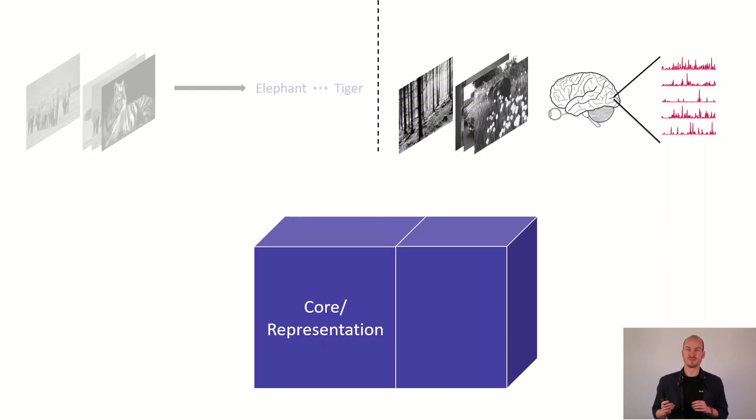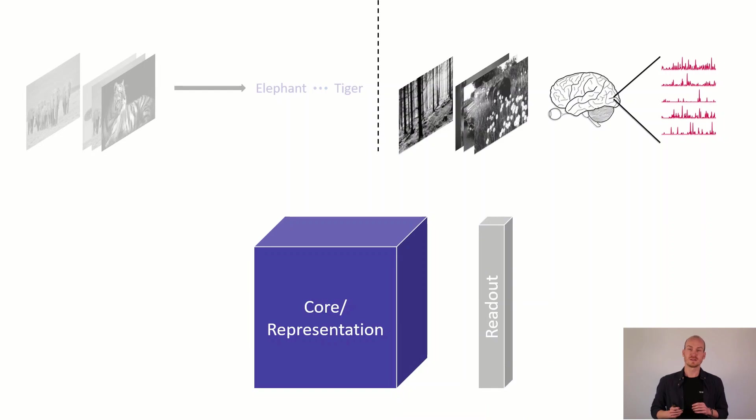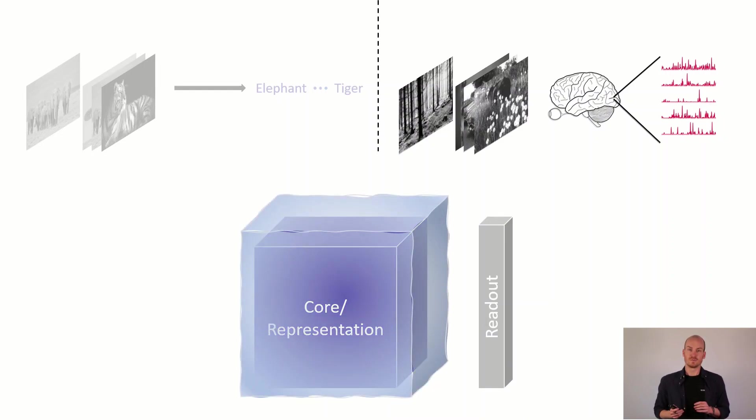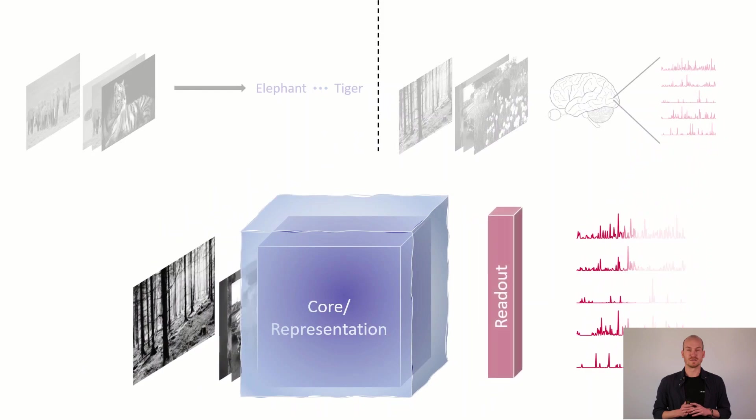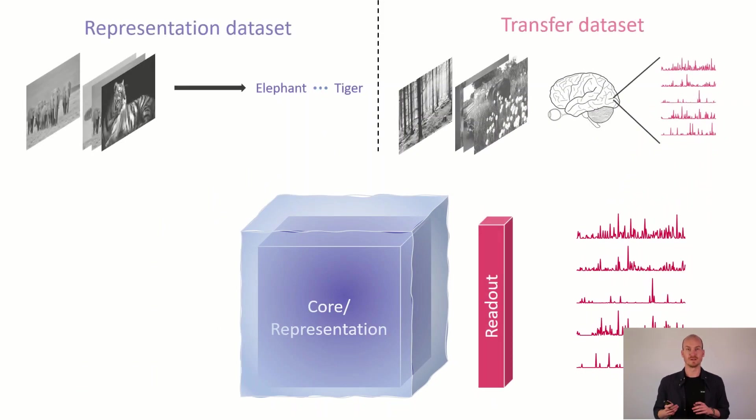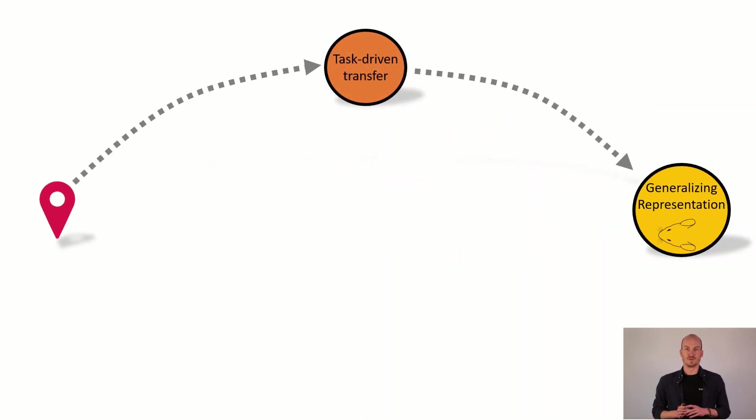We cut the representation to a layer that we think is the best and we replace it with a readout that is then, with a frozen core, trained on the neural data itself. This way we predict the neural data.